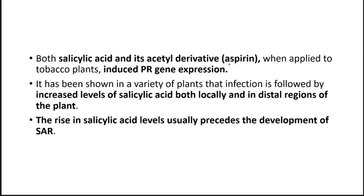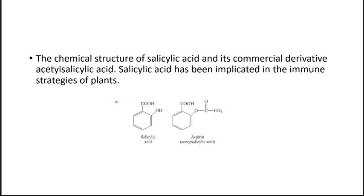It was seen that salicylic acid and its acetyl derivative aspirin, when applied to tobacco plants, activate PR gene expression. Salicylic acid levels are increased both locally — in the region where they are produced — and in the distal region of the plant where they are not produced but are distributed. The commercial derivative of salicylic acid is acetyl salicylic acid, or aspirin. Salicylic acid has been implicated in the immune strategies of the plant.